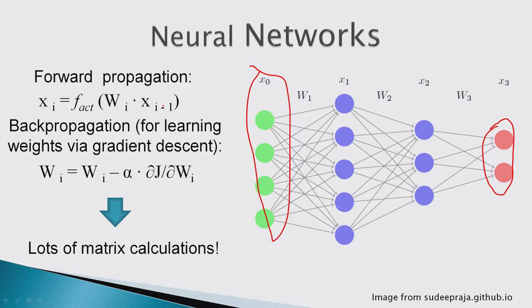Without going too far into formulas, there is the forward propagation formula where you have a matrix of weights times the previous set of inputs. Then you apply an activation function to make it nonlinear, because otherwise if you just had linear blocks, you could combine them into one linear block — essentially just linear regression.